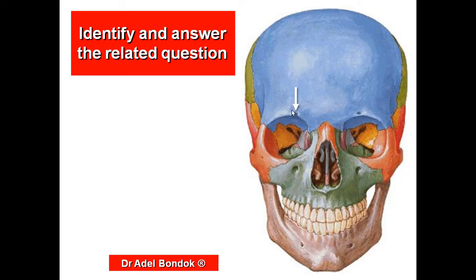This is the supraorbital foramen. The structures which pass through this foramen are the supraorbital nerve and vessels. The supraorbital nerve arises from the frontal branch of the ophthalmic nerve, and the supraorbital artery arises from the ophthalmic artery.